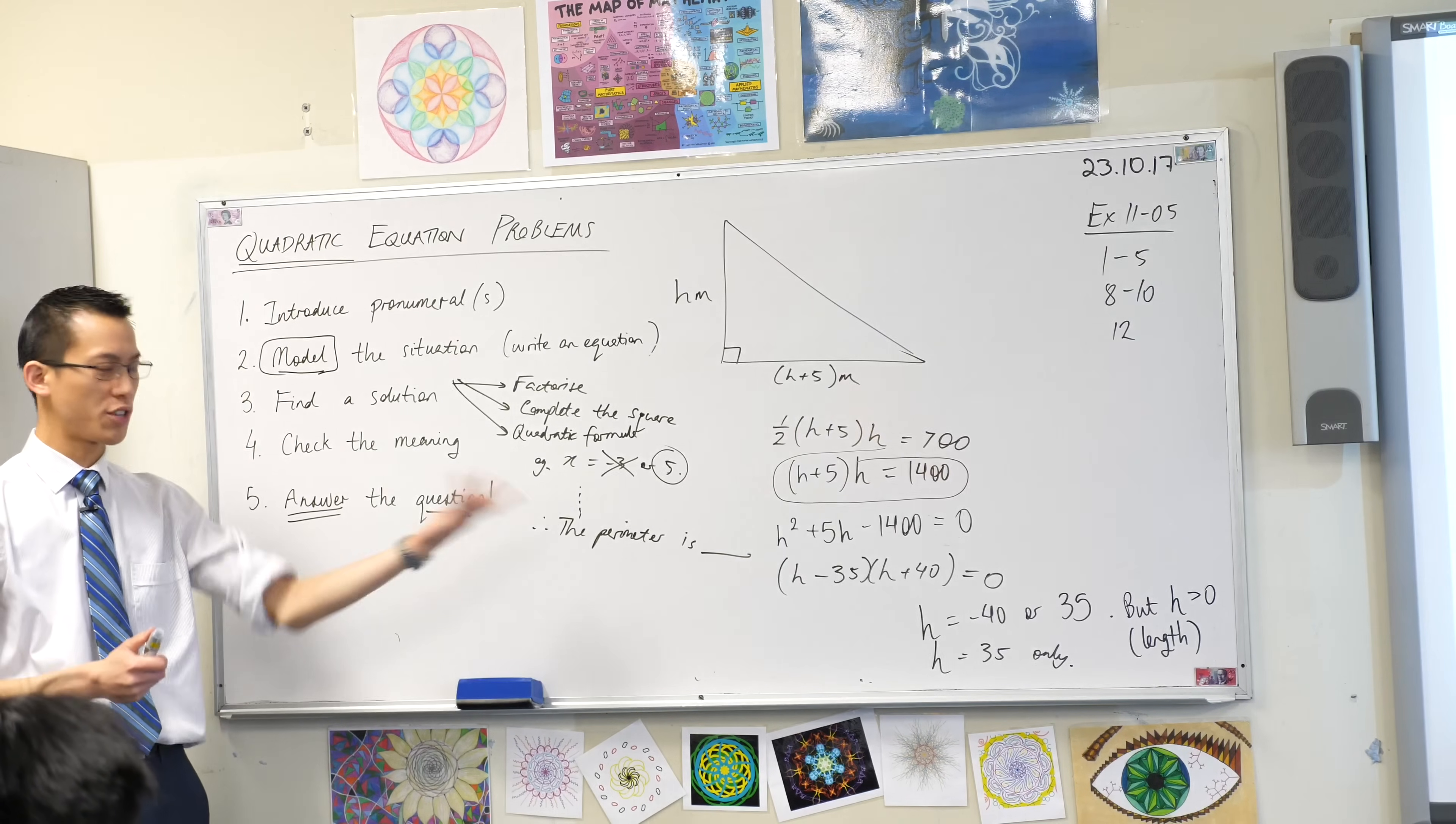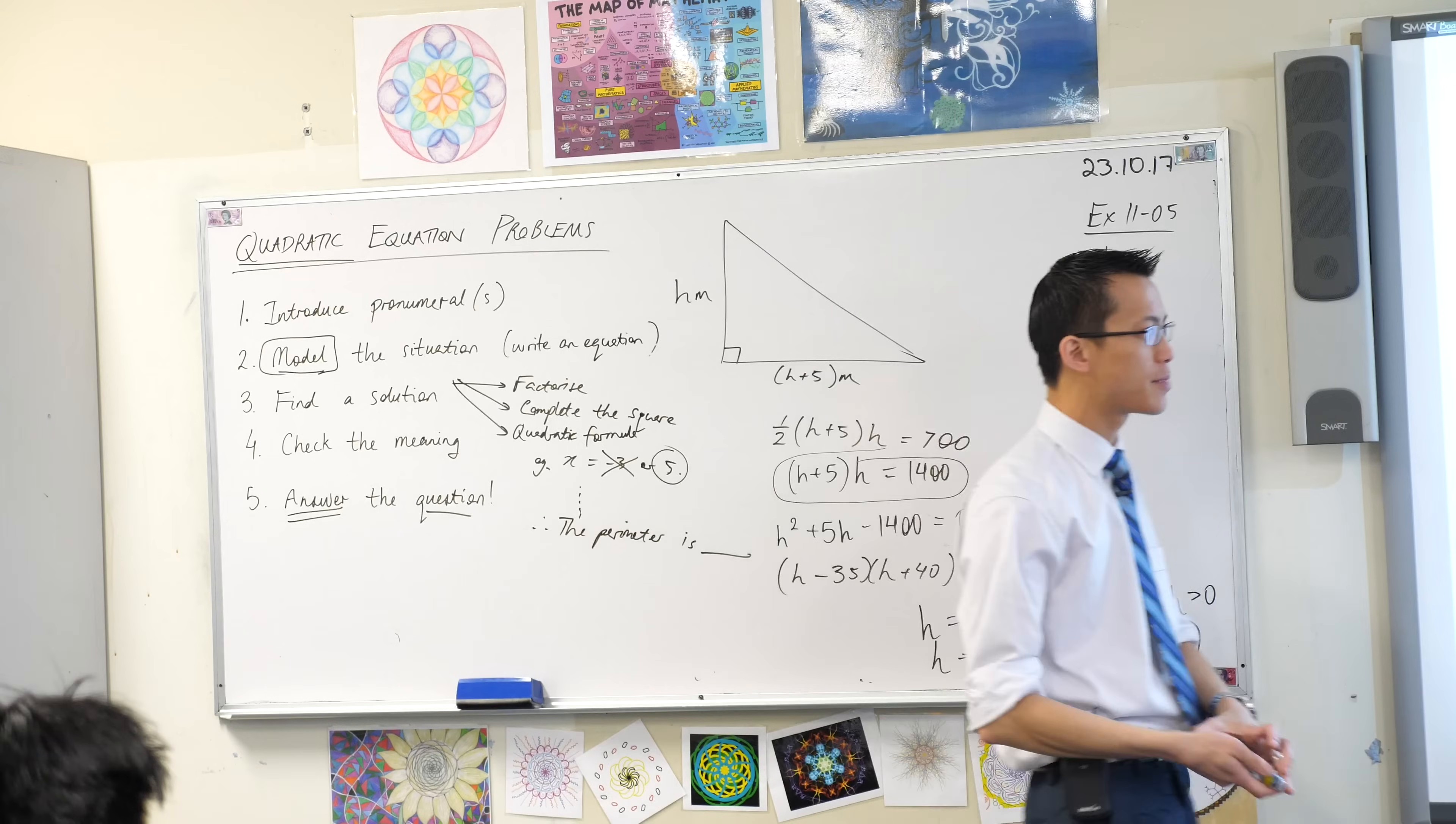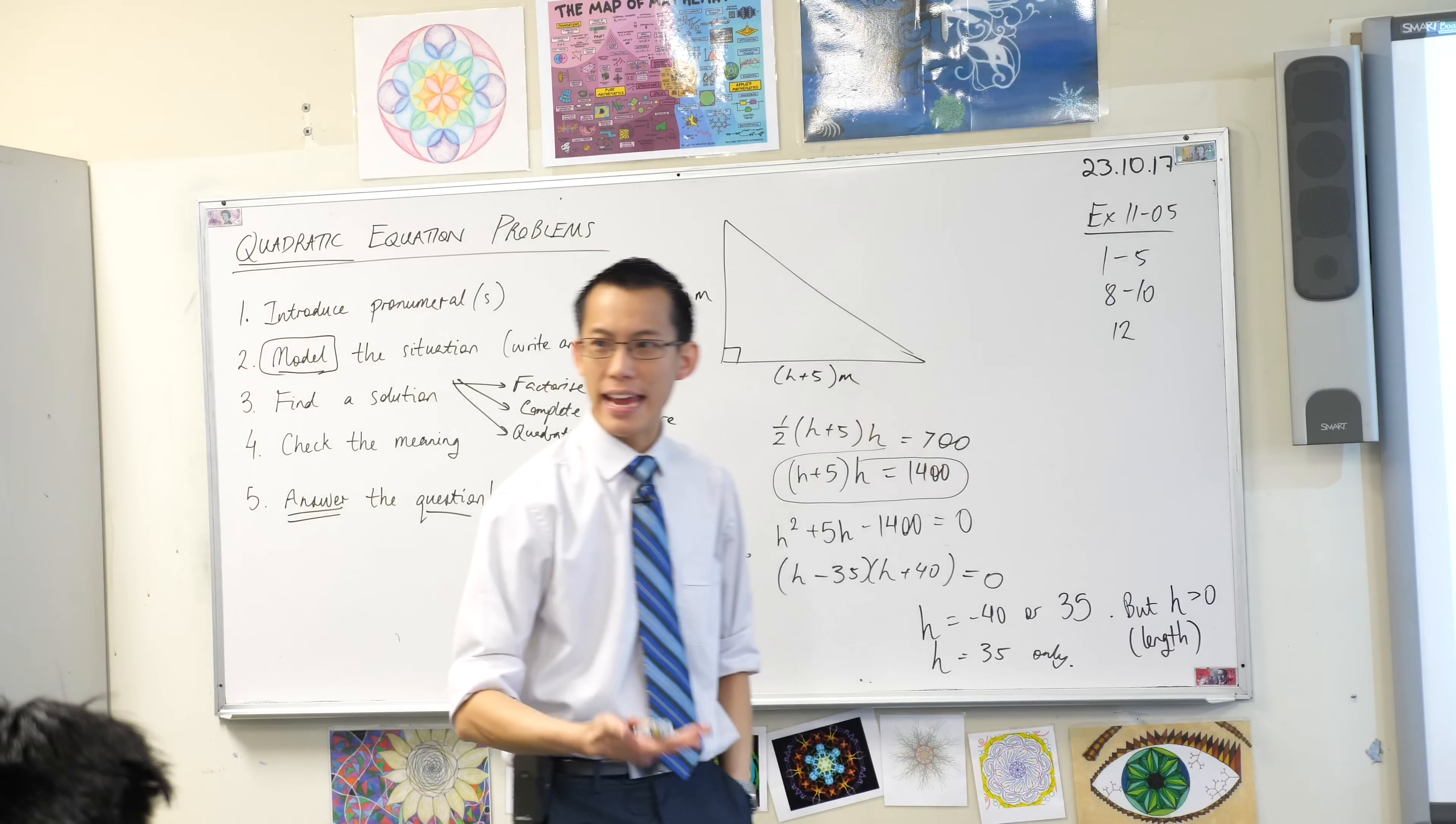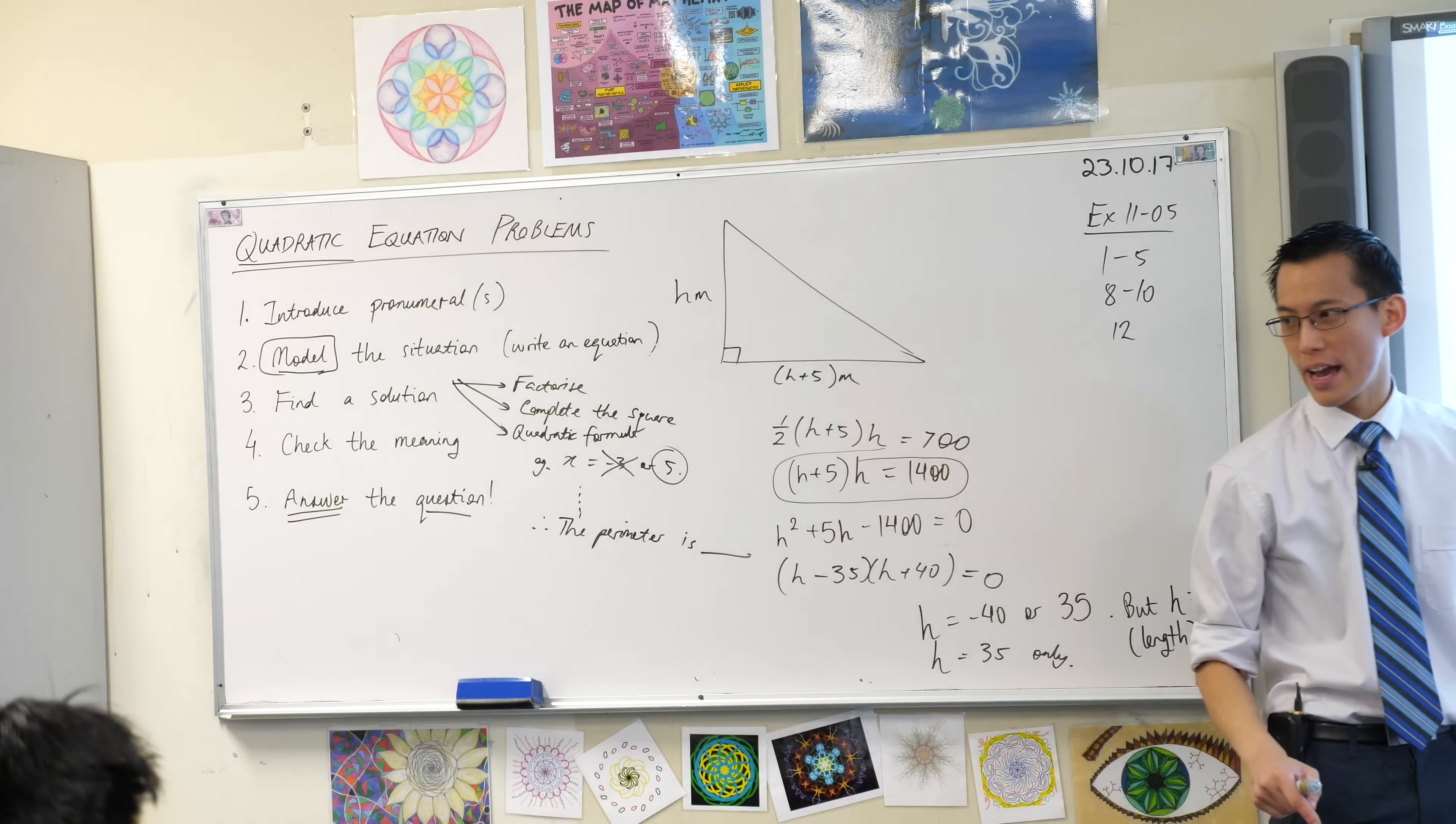Now the last thing is, have I answered the question just by putting that number there? Sometimes you might get lucky. They just want that number. Have a look at what the question asks. So dimensions is more than just one number. I've got the height, but I also need the base. In this case, probably just the base will do, right? When you think about the dimensions of a two-dimensional object, all you actually need for the case of this triangle is its height and its base. You already know it's a right-angled triangle.